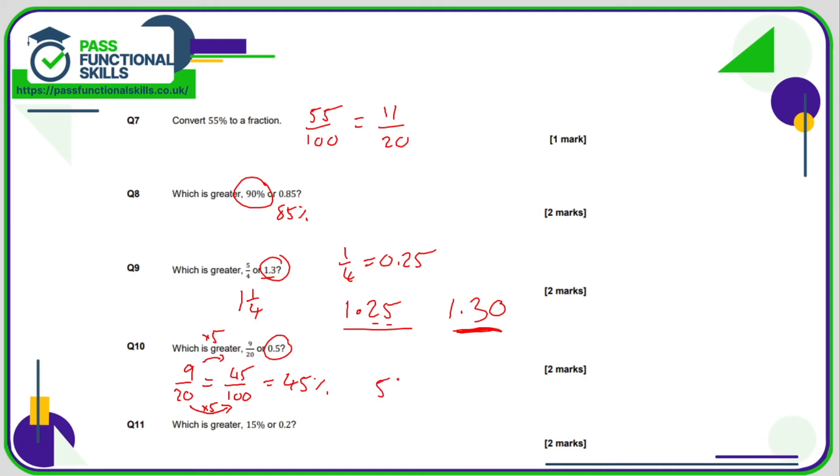0.5, that's the decimal. To turn that into a percentage, multiply it by 100, so that is 50%. Now clearly 50% is greater than 45%, so 0.5 is greater than 9/20. Question number 11: 15% and 0.2. This is a decimal, so if I multiply that by 100, I'll turn it into a percentage, which is 20%. 20% is obviously greater than 15%.